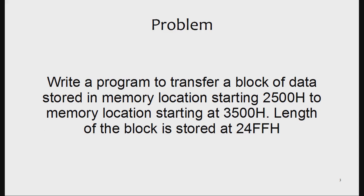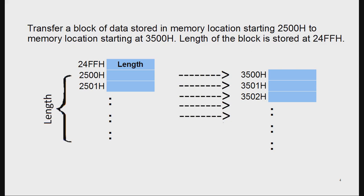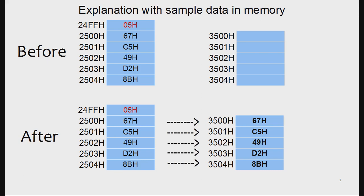Here we have to transfer a block of data which is stored from 2500H onwards. The destination is 3500H onwards. The length of the block is stored at location 24FFH. So 24FFH stores the length — the number of bytes we have to transfer from 2500H to 3500H.